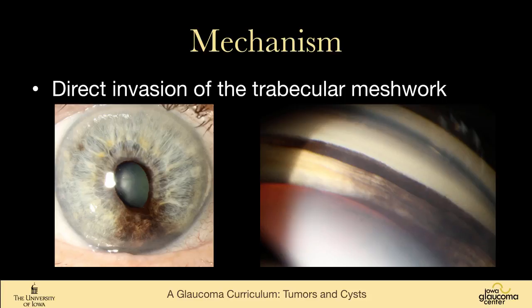Anytime you see somebody who has an iris tumor or ciliary body tumor and an elevated intraocular pressure, it's a very bad sign that the trabecular meshwork has been invaded. The meshwork is almost like a lattice where the cells, once they get in there, have very easy access to grow around and fill the meshwork in a ring, as we see here on the right-hand side.